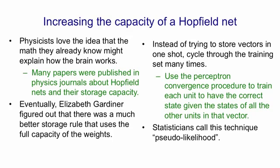This technique has also been developed in another field — statistics — and statisticians call it pseudo-likelihood. The idea is to get one thing right given all the other things. With high-dimensional data, you build a model that tries to get the value on one dimension right given the values on all the other dimensions. The main difference between the perceptron convergence procedure and pseudo-likelihood is that in the Hopfield net the weights are symmetric, so we have to get two sets of gradients for each weight and average them. But apart from that, the way to use the full capacity of a Hopfield net is to use the perceptron convergence procedure and go through the data several times.